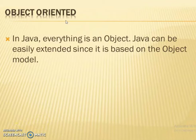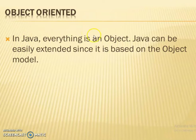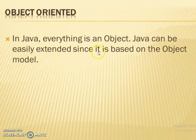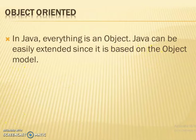Next feature: Object Oriented. In Java, everything is an object. Java can be easily extended since it is based on the object model.